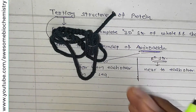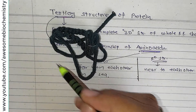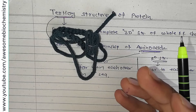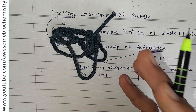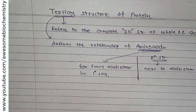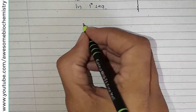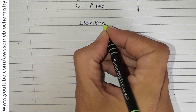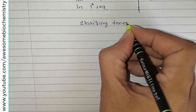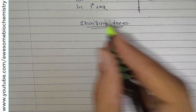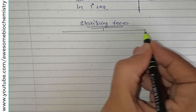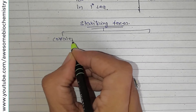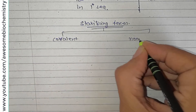This three-dimensional structure must be stabilized by certain forces. The stabilizing forces of the tertiary structure can be of two types: covalent and non-covalent.